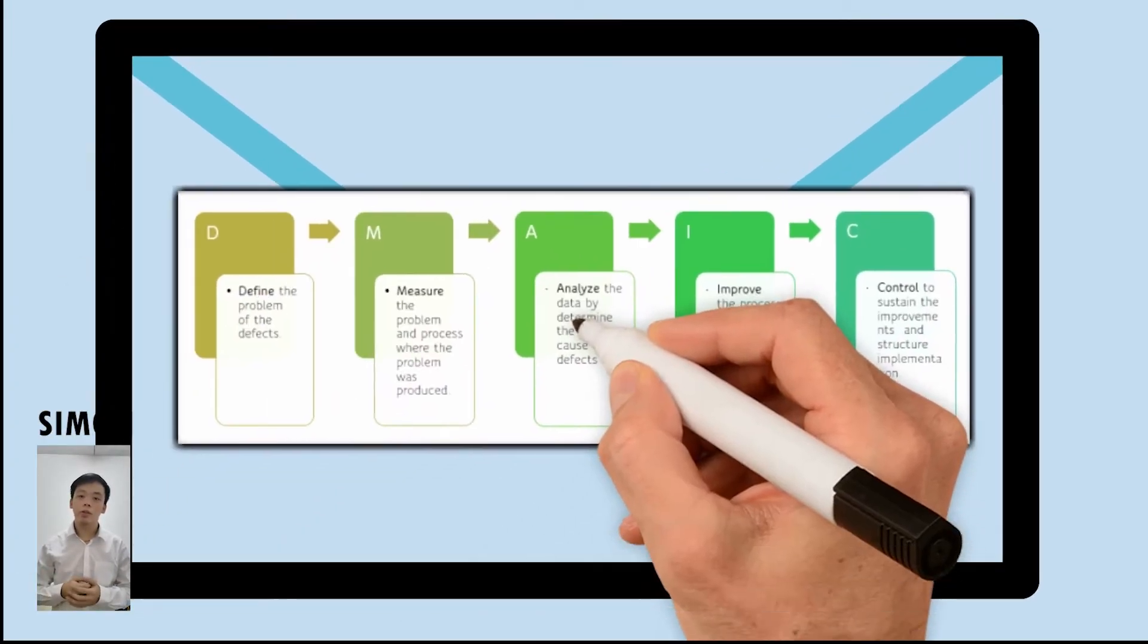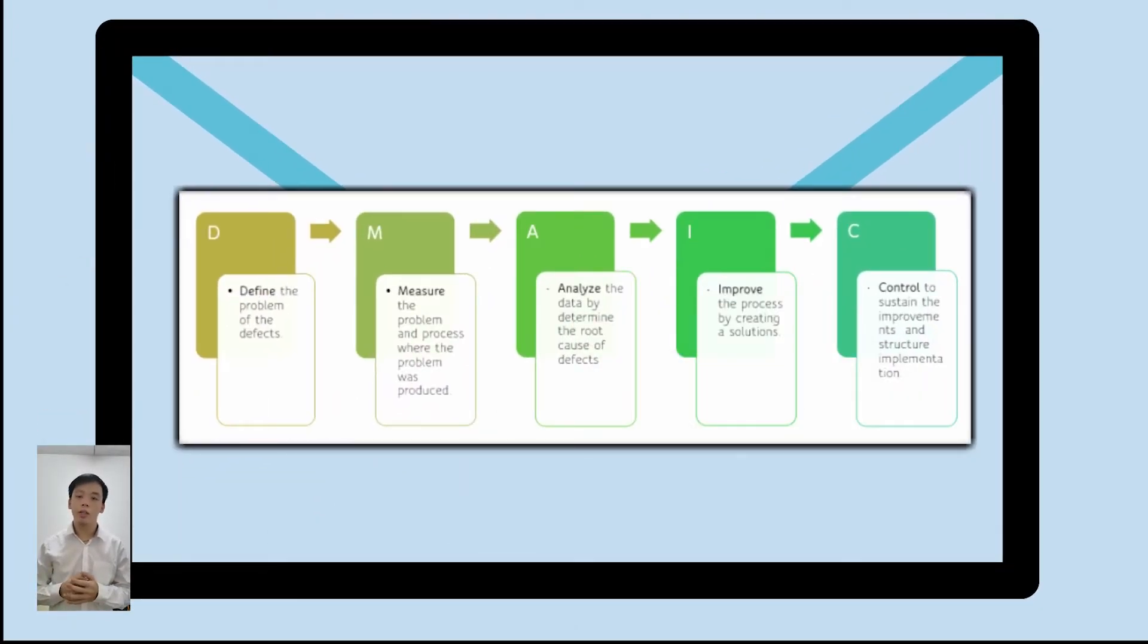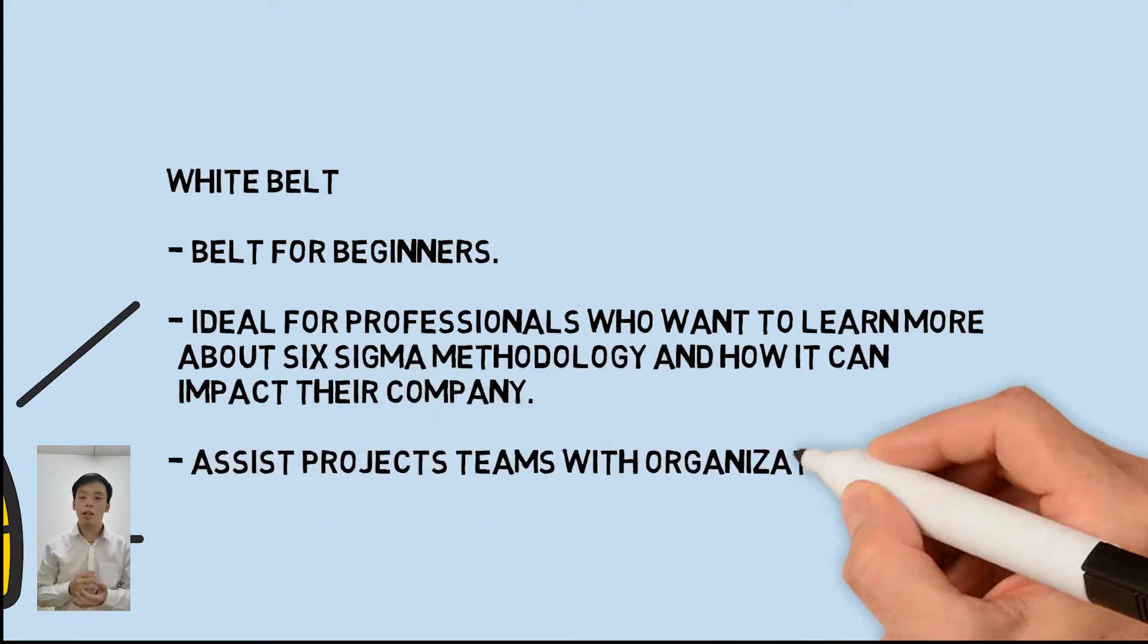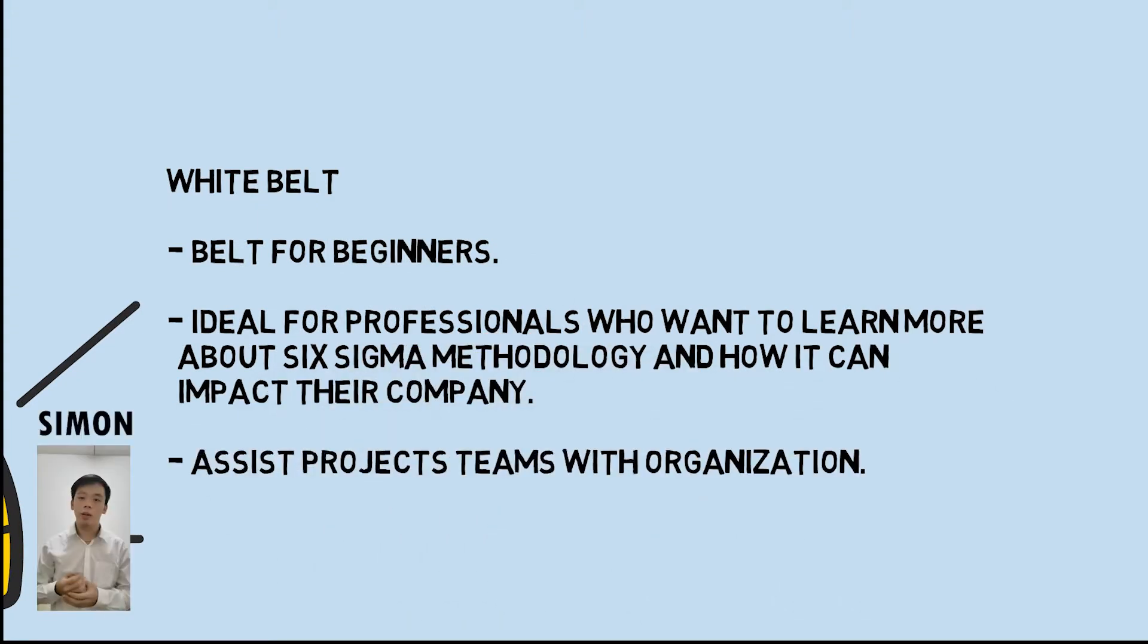There are five methods of Six Sigma. The first one is define, the second is measure, the third is analyze, the fourth is control, and the last is improve.